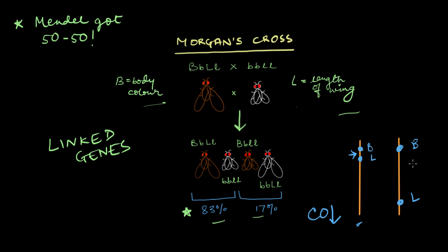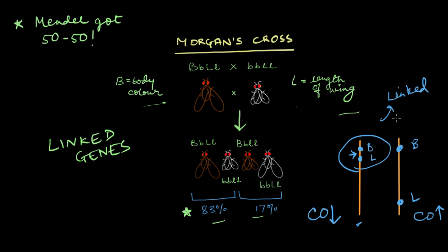If those genes were super far away from each other instead of being close, then the chances of crossing over and recombination would be much higher because you have so much more space to work with. In the case where genes are far apart, you'll have a much higher chance of recombination. The genes that are super close to one another are the linked genes.